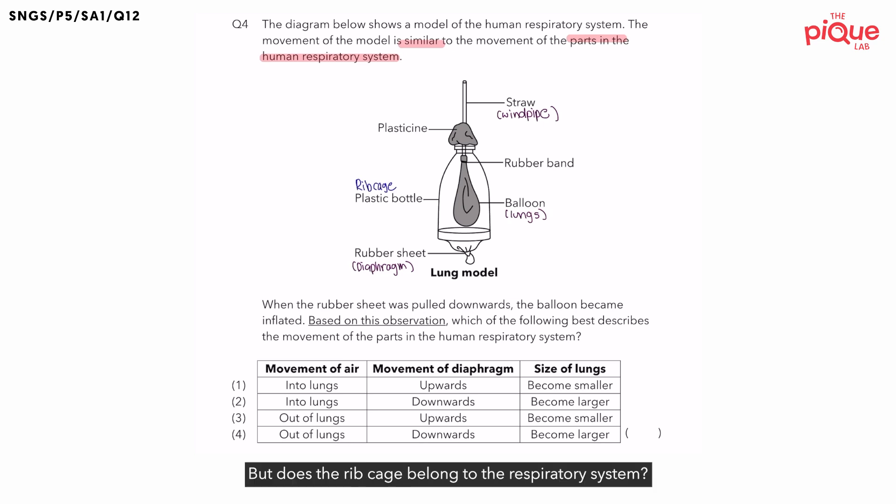But does the ribcage belong to the respiratory system? No. Instead, the ribcage is part of the skeletal system.